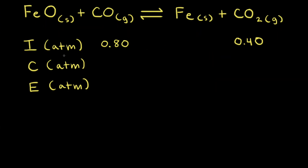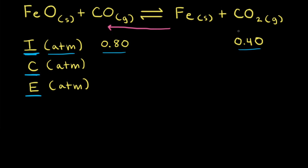Next, let's fill out our ICE table for this reaction. ICE stands for initial partial pressure in atmospheres. The initial partial pressure of carbon monoxide was 0.80 atmospheres and the initial partial pressure of carbon dioxide is 0.40 atmospheres. C stands for change and E stands for the equilibrium partial pressure. Calculating Qp allowed us to realize that the net reaction moves to the left, and if the net reaction moves to the left, we're going to lose some carbon dioxide and gain some carbon monoxide.